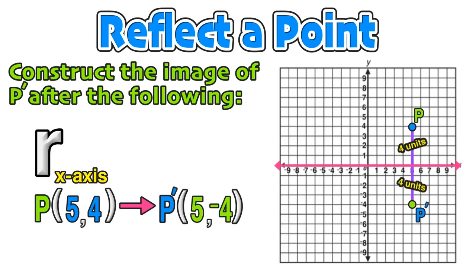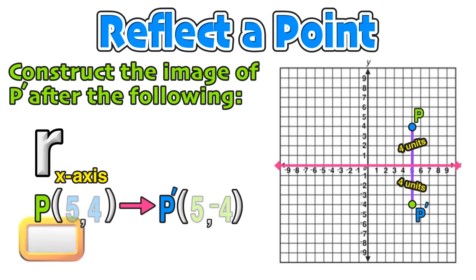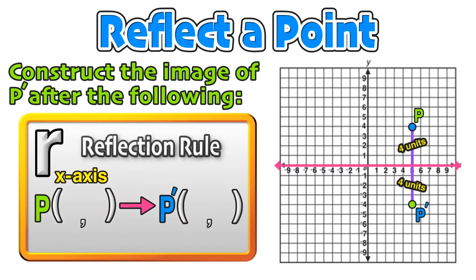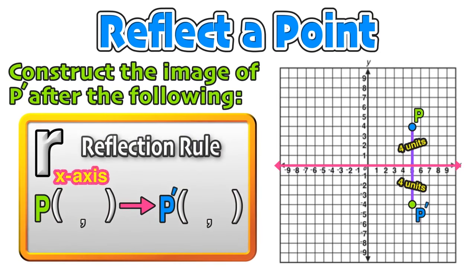When reflecting over the x-axis, we should notice that the value of the x-coordinate did not change. However, the value of the y-coordinate was negated, going from 4 to negative 4. This reflection rule applies to reflecting any point over the x-axis, where the coordinates (x, y) become (x, negative y), meaning that the value of the y-coordinate is negated.